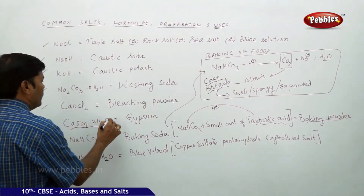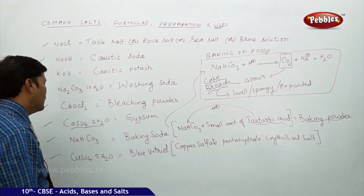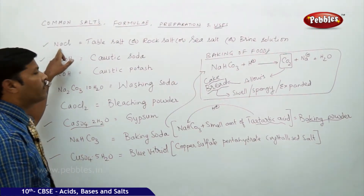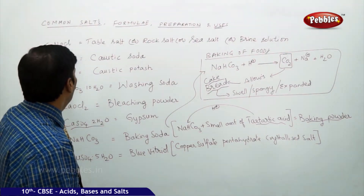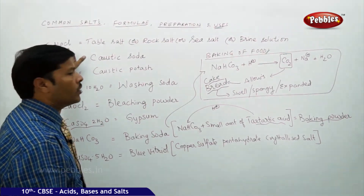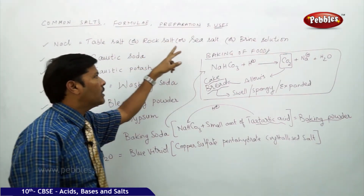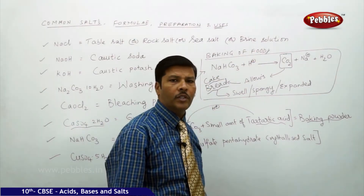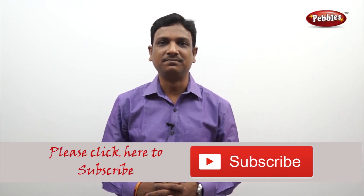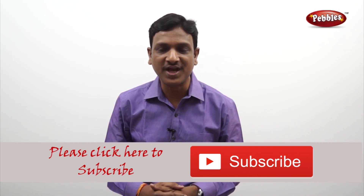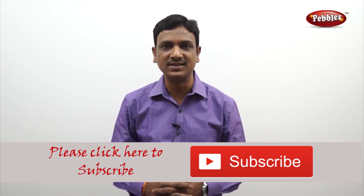Similarly, gypsum is calcium sulphate 2H2O. To recap: sodium chloride is also called table salt, rock salt, sea salt, or brine solution. If you like this video, please give a thumbs up and subscribe to our channel for more videos on the CBSE syllabus.